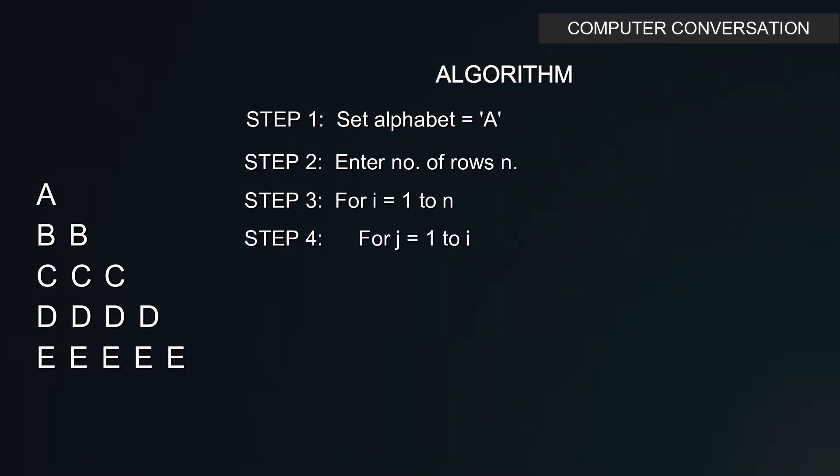Next in step 4, we use nested for loop and run the inner for loop from j equals to 1 to i. Here we will not print any of the values of i or j. Here we will print the value of the character variable alphabet.